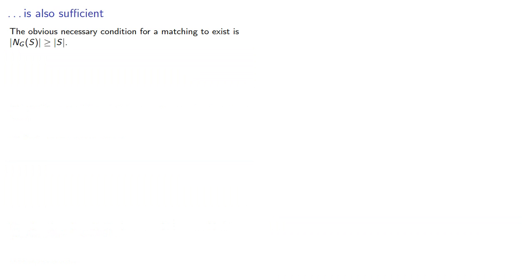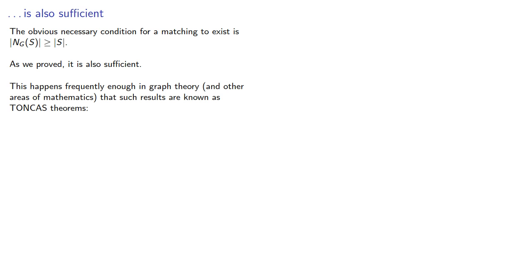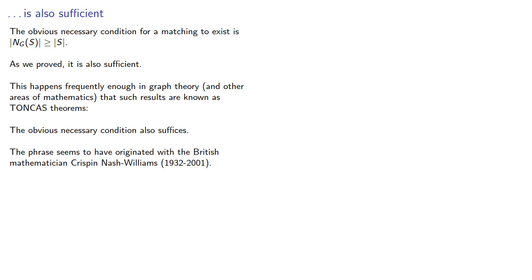The obvious necessary condition for a matching to exist is that the neighborhood be at least as big, and as we proved, it is also sufficient. This happens frequently enough in graph theory and other areas of mathematics that such results are known as TONCAS theorems — the obvious necessary condition also suffices. The phrase seems to have originated with the British mathematician Crispin Nash-Williams.